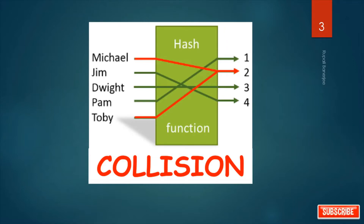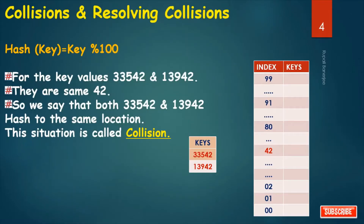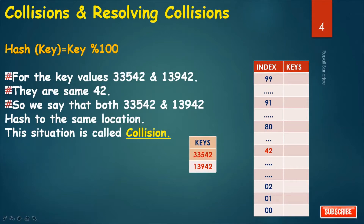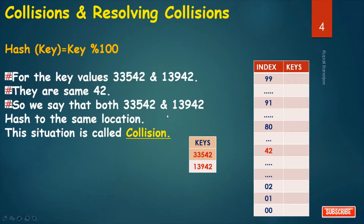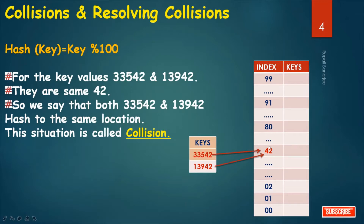Let's take an example to make it more clear. Say our hash function is key mod 100, and the key values are 33,542 and 13,942. The hash key is key mod 100, which equals 42 for both keys. So both 33,542 and 13,942 hash to the same location — for both keys it maps to the same location. This situation is called collision, where two data elements qualify to be stored at the same location in the hash table.